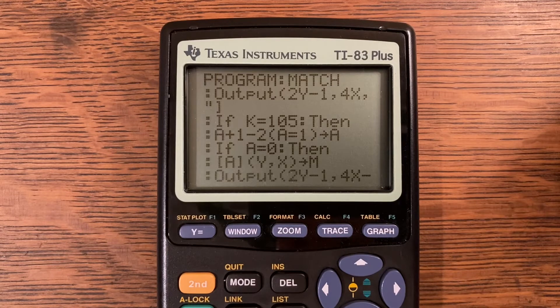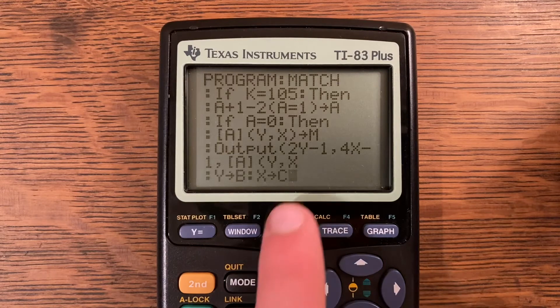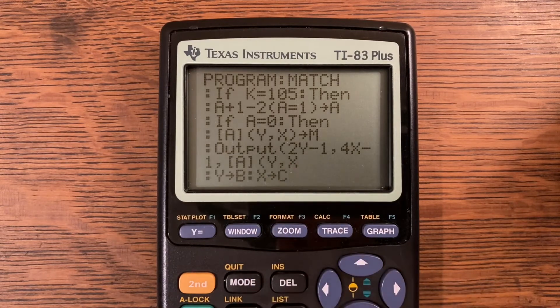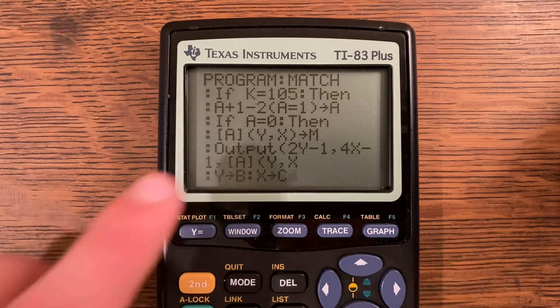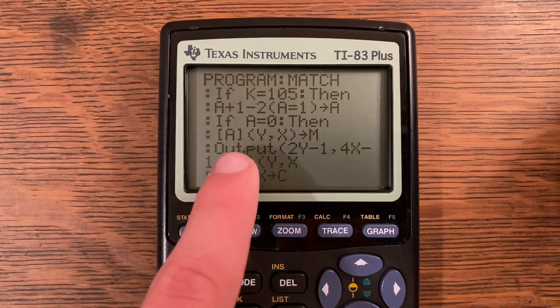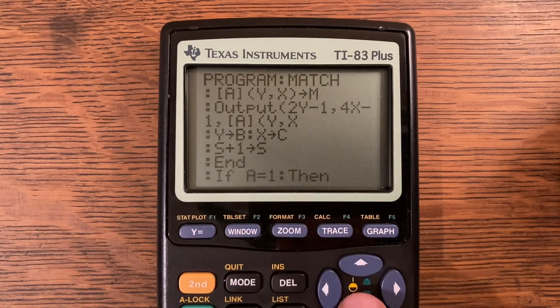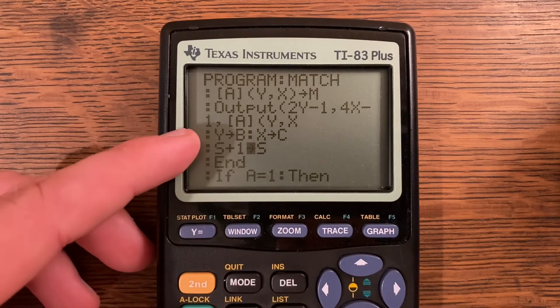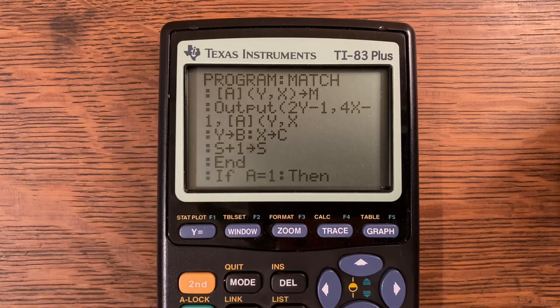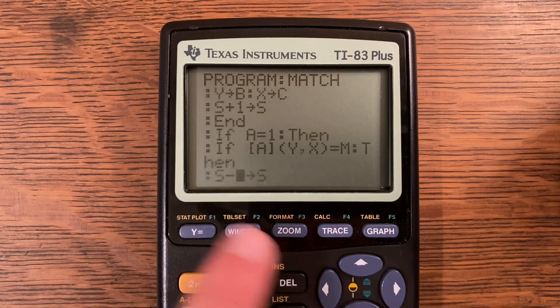If A is equal to 0, then matrix A at Y comma X store into M. Output 2Y minus 1 comma 4X minus 1 comma matrix A at Y comma X. So we're outputting that number because you get two shots. You don't just guess one then guess another, you guess one and see if they match. That's why I'm doing the whole A is equal to 0, and then A is equal to 1 will be right down here. Then Y store into B and X store into C, and S plus 1 store into S, which is your score right there.